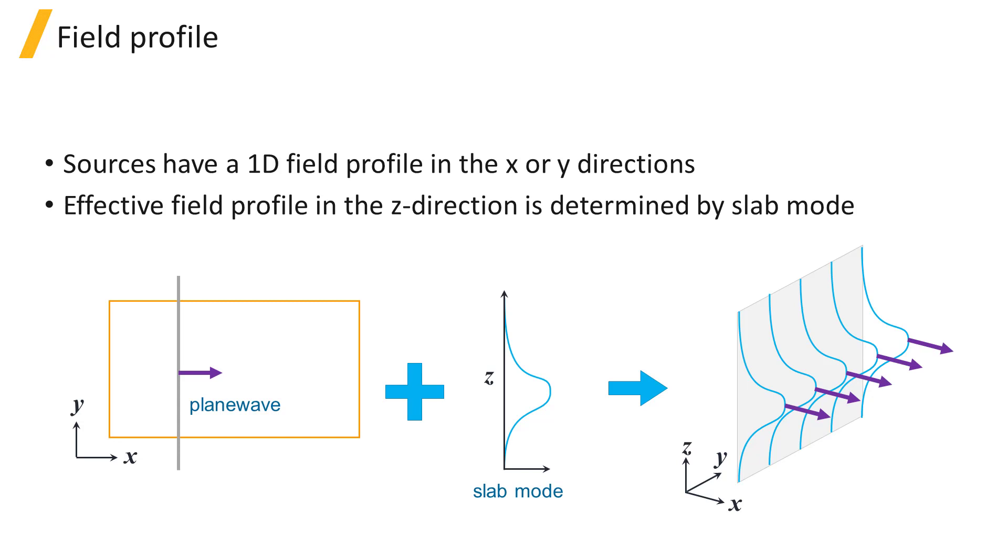For example, consider the slab-plane wave injected in the X direction. The field profile along Y is a uniform distribution, and this is what gets injected in the simulation with effective materials.